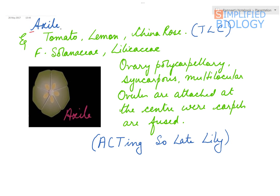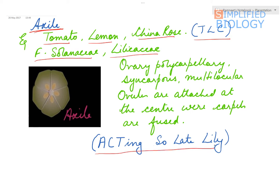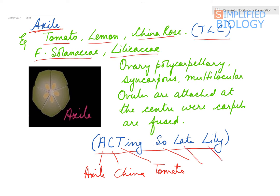Next is axile placentation, which can be seen in tomato, lemon, and china rose — you can remember them as TLC. This is characteristic of family Solanaceae and Liliaceae. You can remember this as 'ACTSO-L': A for axile, C for china rose, T for tomato, SO for Solanaceae family, L for lemon, and the last part for Liliaceae.